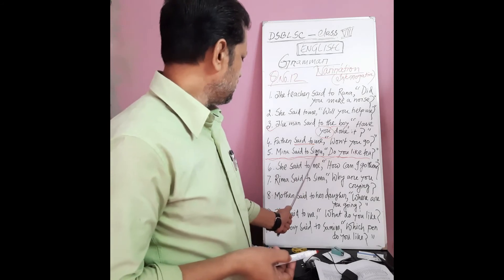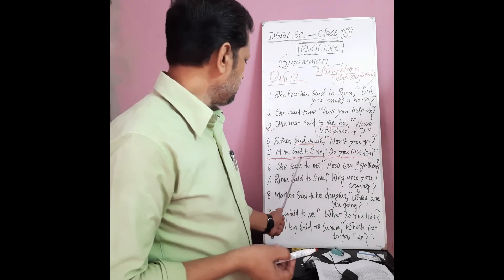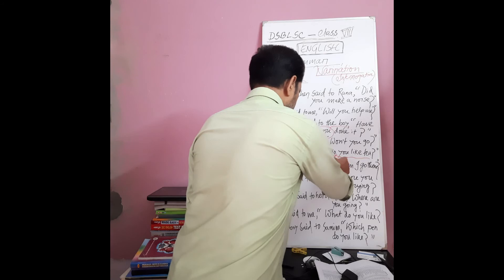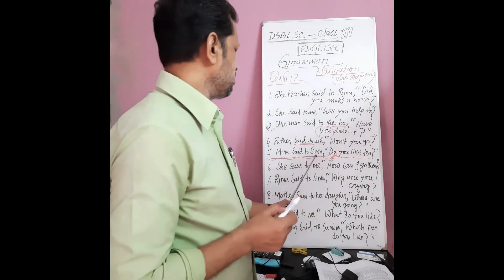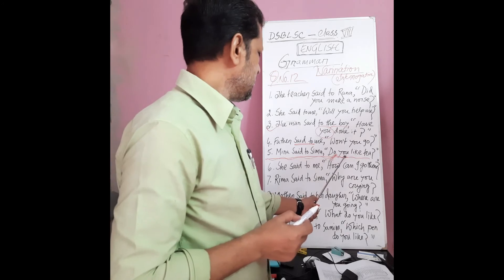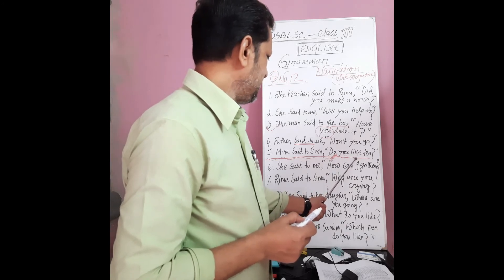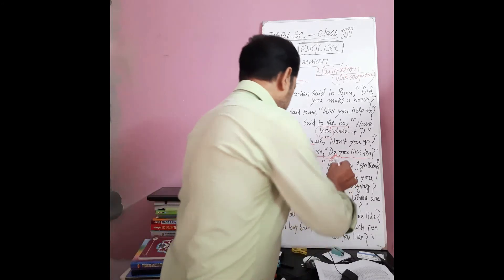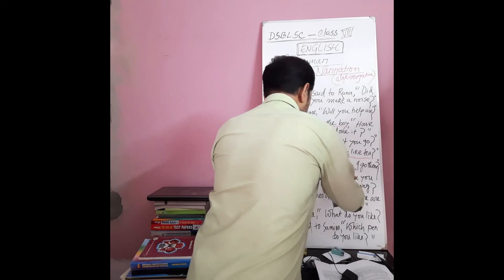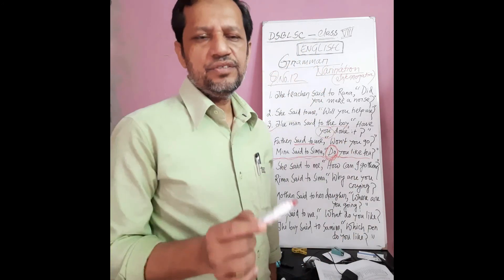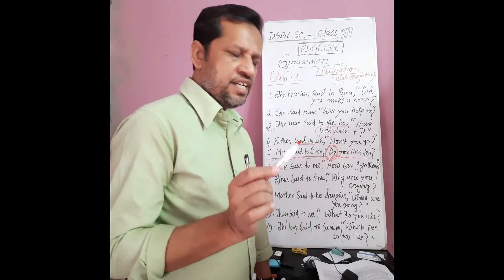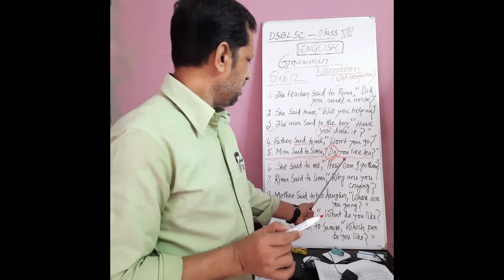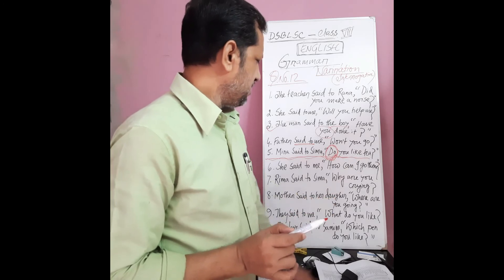Example five: 'Mina asked Shima, do you like tea?' — 'do' is present indefinite used to make the question. So: 'Mina asked Shima if she liked tea.' Most students want to write 'did,' but since 'do' was only used to form the question, you need not write 'did.' The answer is: 'Mina asked Shima if she liked tea.'